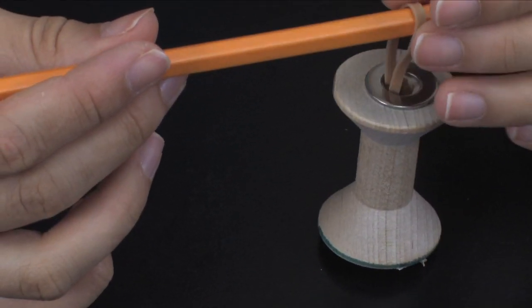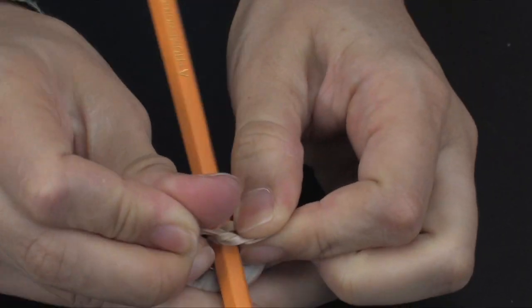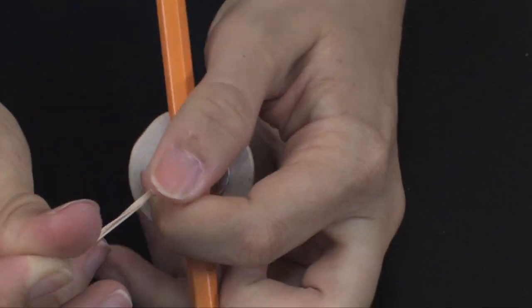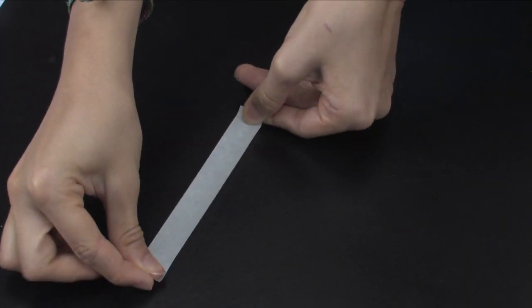Students will put the pencil through the loop of the rubber band. They should make a knot in the rubber band if it is too long. Have students put the 15-centimeter piece of masking tape on a flat surface to serve as the starting line.